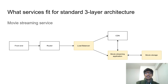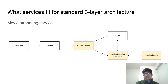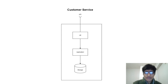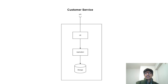This is shown in the movie streaming service in the Netflix system architecture diagram. You can see the movie streaming service highlighted in yellow, showing the standard three-tier architecture: load balancer, application, and storage. Another example is the customer service in the banking system architecture, which also has the traditional three-tier pattern: load balancer, application, and storage.